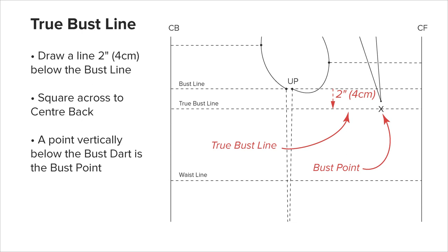The true bust line: draw the true bust line 2 inches or 4 centimeters below the bust line and square across to center back. Mark on it the bust point in line with the bust dart.